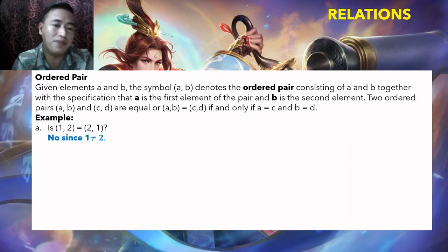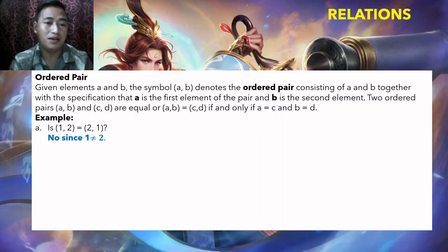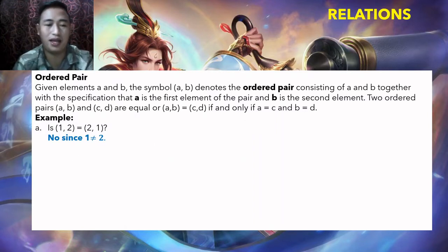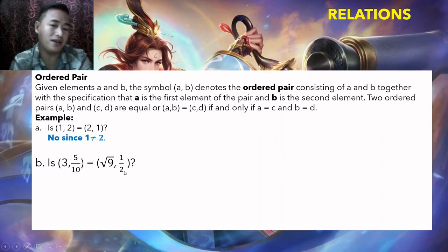If we plot these on the Cartesian plane, they would be different points. In the Cartesian plane you can plot ordered pairs — they are different points. Next, is (3, 5/10) equal to (√9, 1/2)? They are equal.